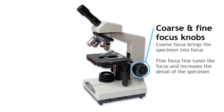The coarse and fine focus knobs. These move the stage towards or away from the objective lenses, depending on which way it is turned. The coarse focus knob brings the specimen into focus. The fine focus fine tunes and increases the detail of the specimen.